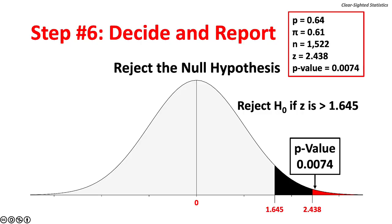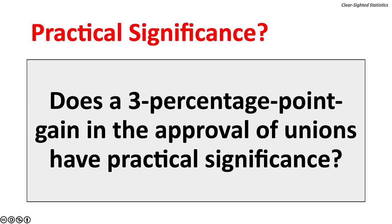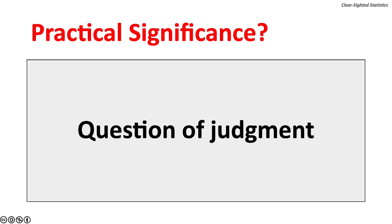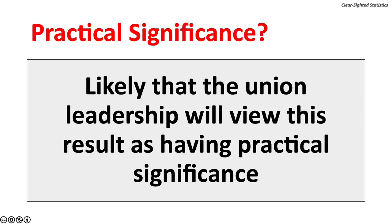Step 6: Decide and Report. With a test statistic as high as 2.438 and a p-value as low as 0.74%, the test has statistical significance. There is sufficient evidence to reject the null hypothesis at 5% and 1% significance levels. The proportion of Americans who favor labor unions has increased. Does a three-percentage-point gain have practical significance? Practical significance is often a question of judgment. It is likely that union leadership will view this result as having practical significance.